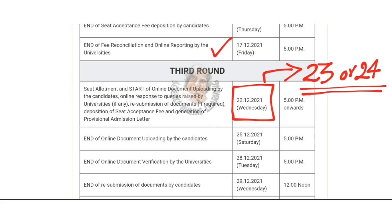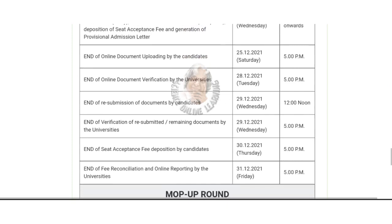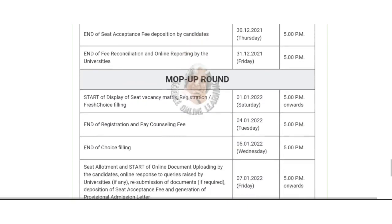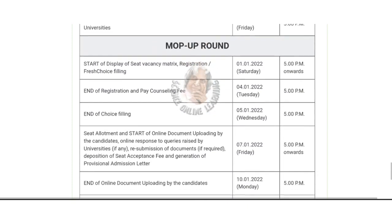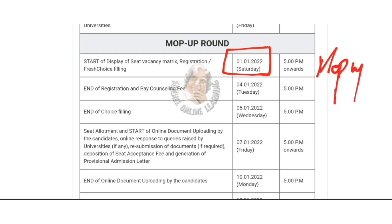If you submit a request by December 30, you can get a full refund. If you don't get a seat, that's the refund amount. Then you can get a request — you have to get an upgrade in the mop-up round. In the third round, you can get the upgrade process.